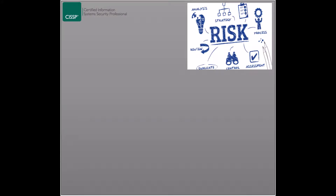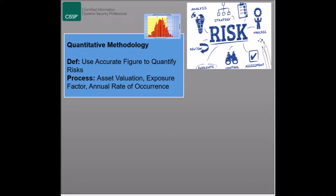There are two risk assessment methodologies: the quantitative methodology and the qualitative methodology. The quantitative methodology provides a picture of the identified risks and their impacts in terms of accurate figures and numbers. The main issue with this methodology is that not all the risks or their aspects could be quantified, or at least not accurately quantified. This process starts with identifying the assets and assigning values to them, then identifying the probability and impact of the threats that could affect them.